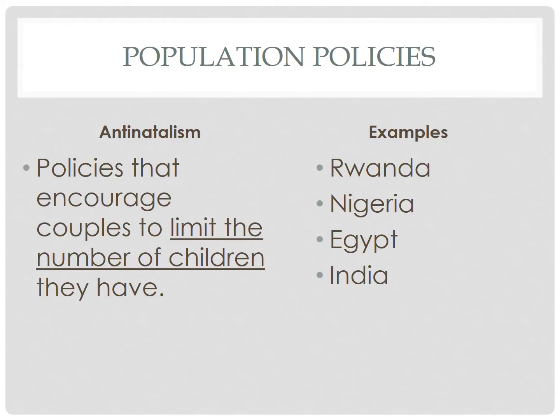So let's dive straight into some examples. The Central African country of Rwanda has seen some results by promoting antinatalism in the form of family planning. The use of family planning increased from less than 5% in the year 2000 to over 50% in 2010. As a result, the total fertility rate in Rwanda is around 4 babies per woman, down from over 8 babies per woman in 1979.